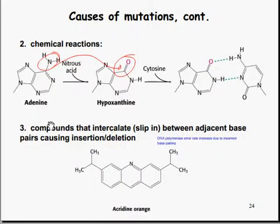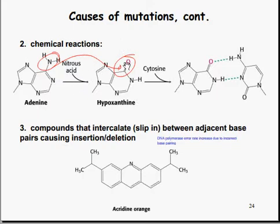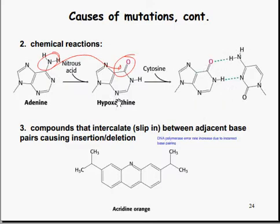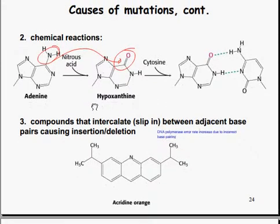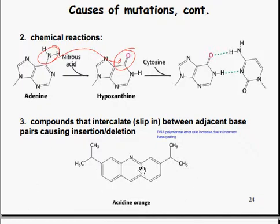The addition of nitrous acid to adenine can create hypoxanthine with an oxygen in place of a nitrogen, which can then bond to cytosine — so you get A to C bonding instead of A to T bonding, leading to bad hydrogen bonding and wrong base pairing. Additionally, some compounds can intercalate, or slip in between adjacent base pairs, causing insertions and deletions — examples include acridine and acridine orange, which can slip in between base pairs.